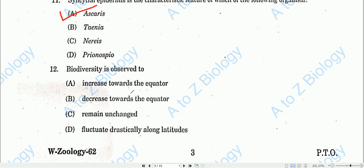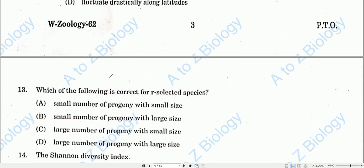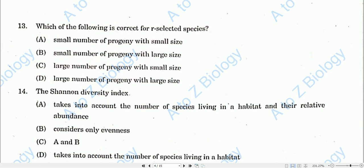Question number twelve: Biodiversity increases towards the equator. When we move from the poles to the equator there is an increase in biodiversity, and when we move from equator to polar regions there is a decrease. Option A will be the correct one.